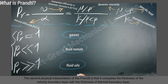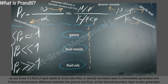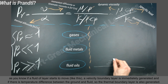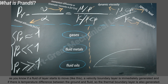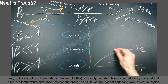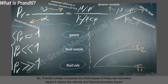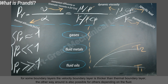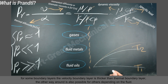The second physical interpretation of Prandtl number is that it compares the thickness of the velocity boundary layer with the thickness of the thermal boundary layer. For example, when a fluid layer starts to move, a velocity boundary layer is immediately generated. If there is a temperature difference between the ground and the fluid, a thermal boundary layer is also generated. Prandtl number compares the thicknesses of these two boundary layers — the velocity and thermal boundary layers.